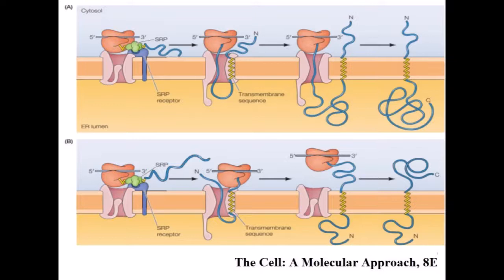In the second case, the internal transmembrane sequence is oriented to direct the transfer of the amino-terminal portion of the polypeptide. Continued translation results in a protein that spans the ER membrane with its amino terminal in the lumen and its C-terminal in the cytosol.